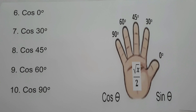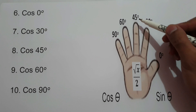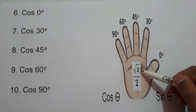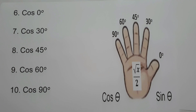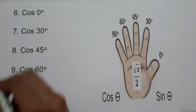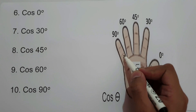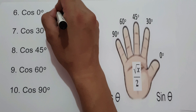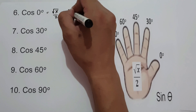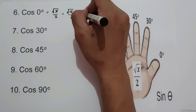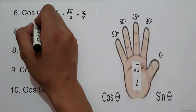On the second set of examples, we are going to find the value of cosine 0°, 30°, 45°, 60°, and 90° using the equation square root of x over 2. For cosine 0°, we count the number of fingers between 0° and cosine: 1, 2, 3, 4 — so there are 4 fingers. Square root of 4 over 2 equals 2 over 2, which is 1. Cosine 0° is 1.